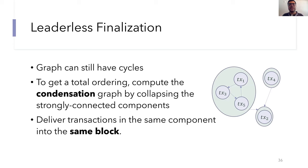The second problem is that the dependency graph may still have cycles. To get a total ordering, we'll compute the condensation graph by collapsing the strongly connected components. The condensation graph is now guaranteed to be acyclic. And vertices in a cycle will be included in the same strongly connected component. So now we can use the trick I mentioned earlier by delivering these cycles together. This is done by delivering the transactions in the same strongly connected component as part of the same block.